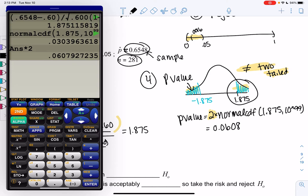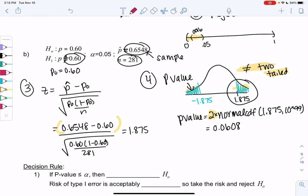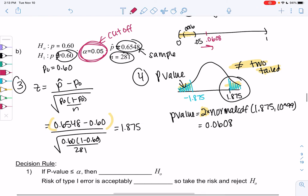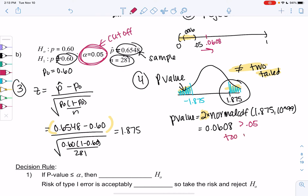So we'll do normal CDF, 1.875 to infinity or 10 to the 99. And then make sure you double it. And we get 0.0608. So the risk is little. It's only 6%. But we said we're only going to take 5% risk. So because it's past that 5%, 0.0608, it's too much risk and we do not reject. So we didn't have enough evidence to reject H0 and say H1 was true. So that's just called not rejecting. It just means maybe H0 is still true.